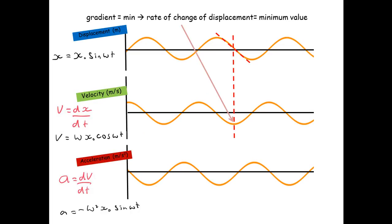And then here our displacement is going to a minimum. Oh sorry, the rate of change of displacement is going to a minimum. And if you look at the velocity, well there it's at the lowest possible value.